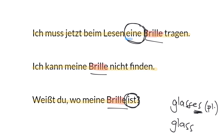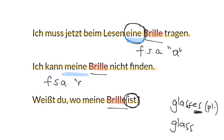Therefore, we say eine — the feminine, singular, accusative indefinite article, that is the word for 'a'. And then in the second sentence we have meine, which is the feminine, singular, accusative form of the word for 'my' — the possessive adjective — which has exactly the same endings as eine. They get them from the same table. And in the third sentence, of course, we have the same possessive adjective, meine, which is also singular.